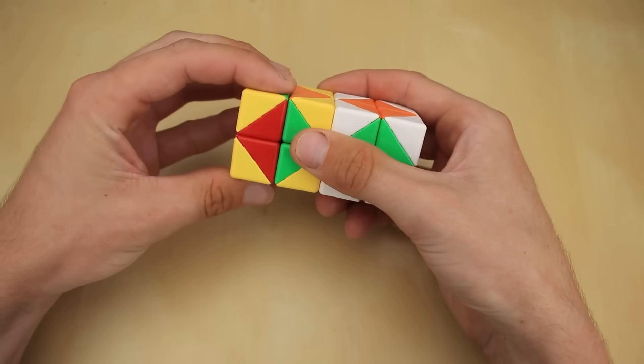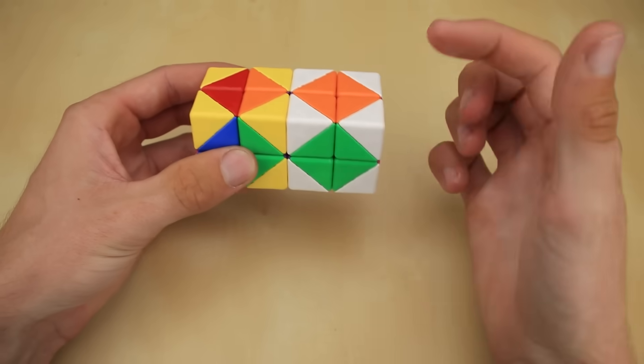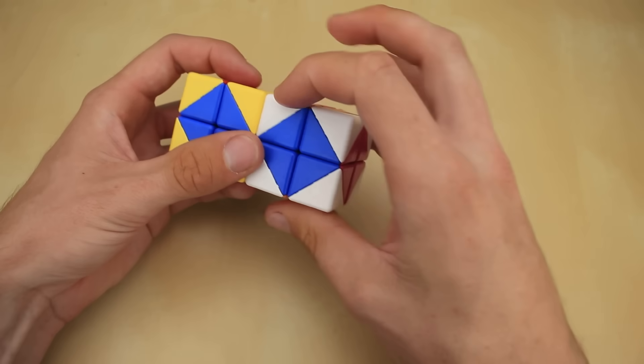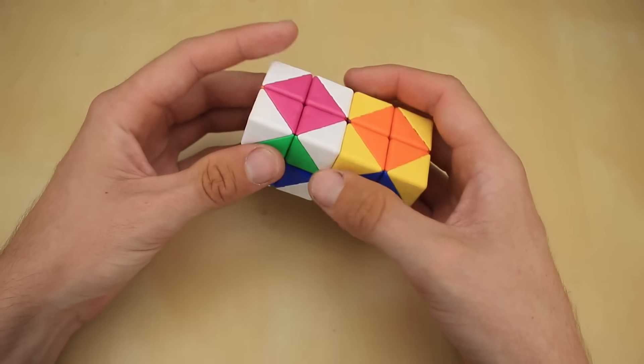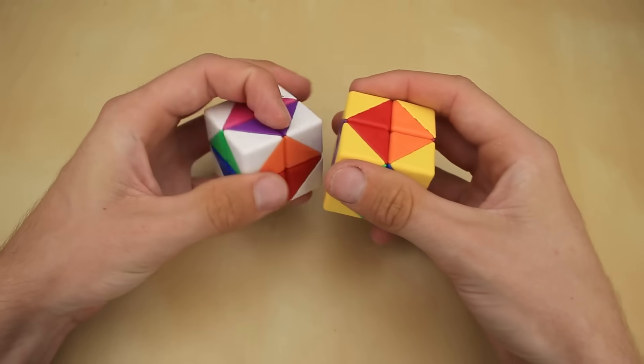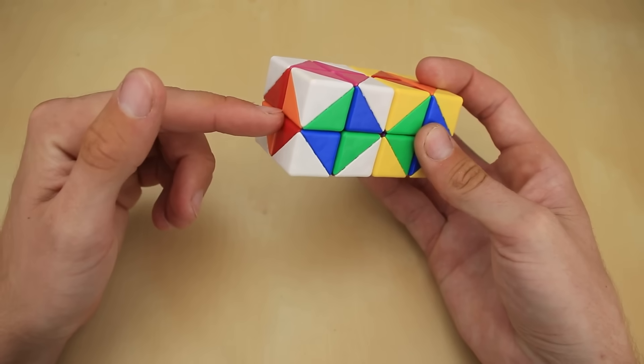So it might not look like it, but this is actually possible to solve. Again, you're not allowed to do just a single turn on one side of the puzzle, but you can actually end up a double turn away from being solved with no obvious way to solve it. But fortunately, there is a very easy algorithm that you can do to fix this. It's basically just doing a checkerboard pattern on one of the cubes.